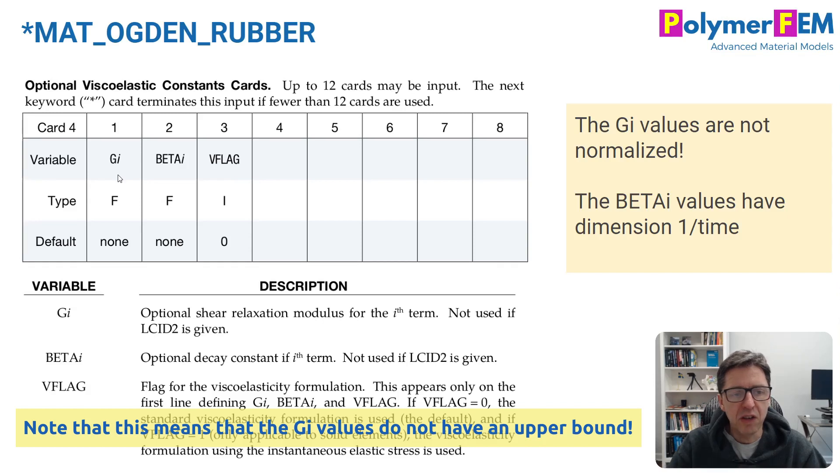They're not given as prony parameters but as the full relaxation modulus itself. So they are not normalized. These have dimensions of stress. So you need to give the stress values for them.